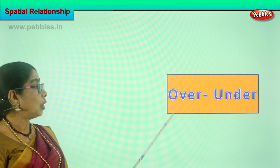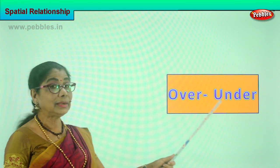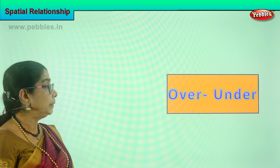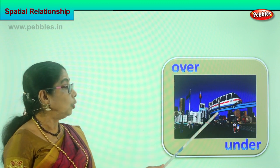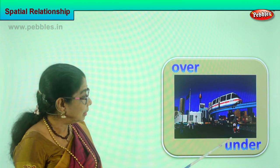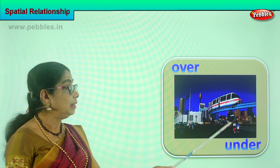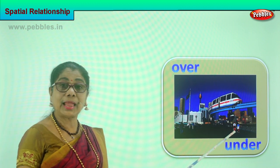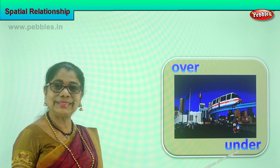Next, we are going to talk about over and under — the relationship between over and under. Look at the picture carefully and learn for yourself. Over, under. What is going over the bridge? A train. And what is under? There is a road under and there are vehicles going under the bridge. Over the bridge goes the train. Under the bridge go the vehicles and the people. Over, under.